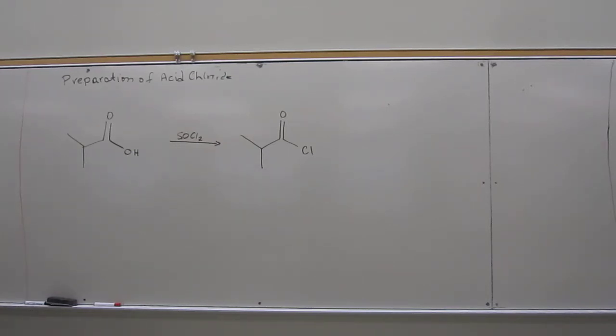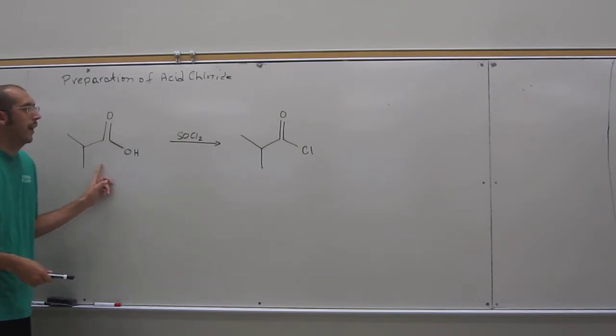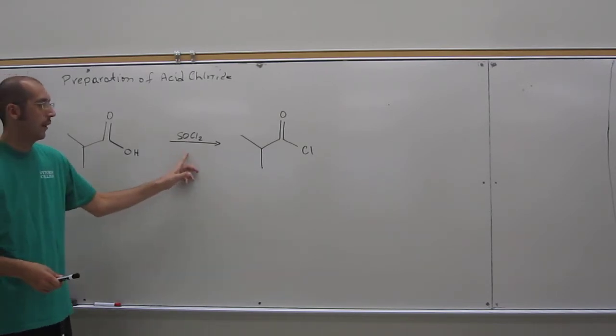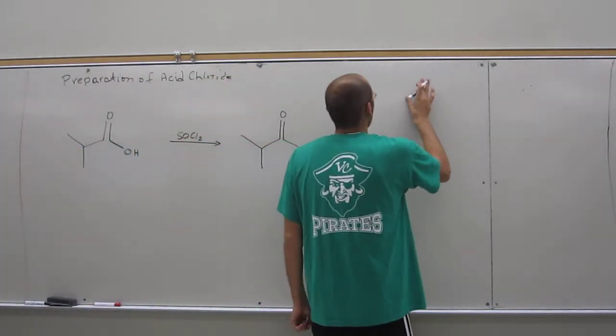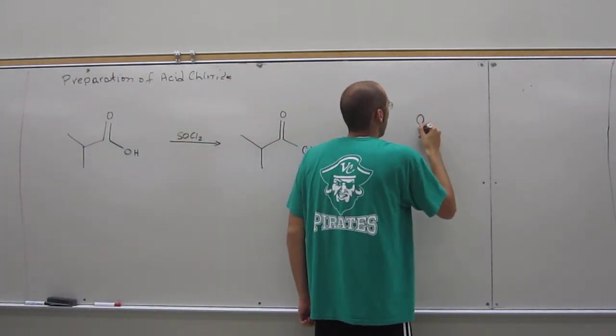So again, we're going to prepare an acid chloride from a carboxylic acid using thionyl chloride. Again, remember, I guess we'll over here, we'll draw the resonance forms of thionyl chloride.